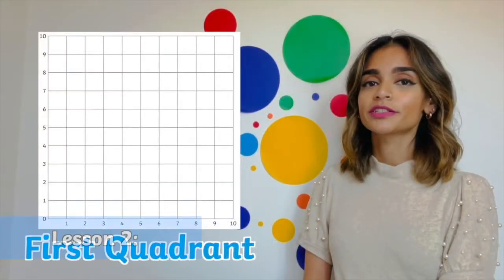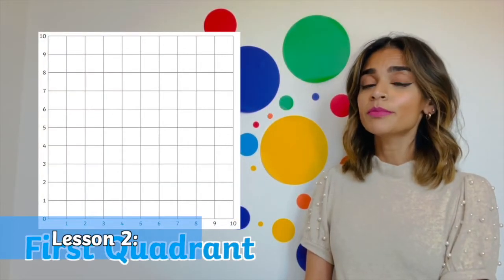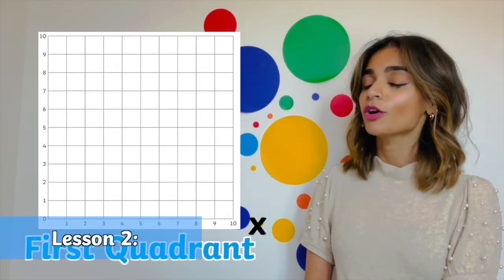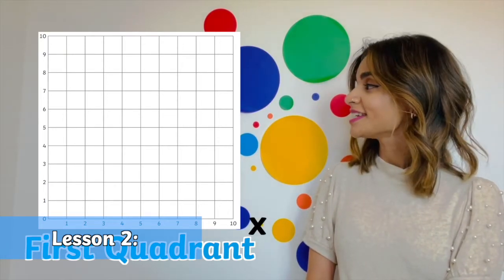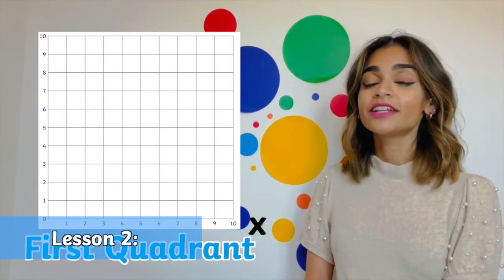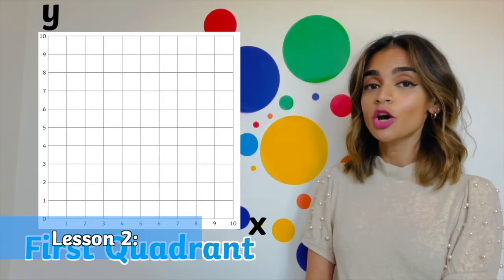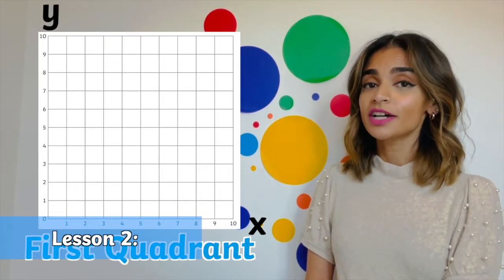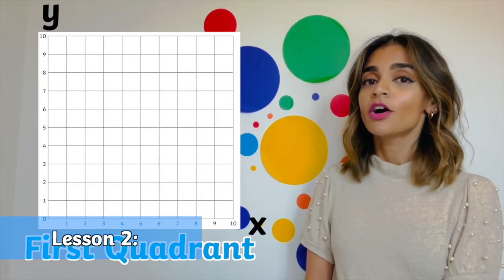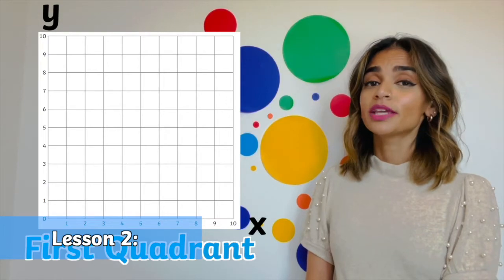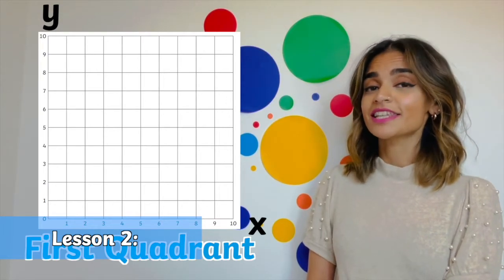In lesson two, children will develop their understanding of how to draw, locate and complete a shape on a grid. They will pick their own coordinates to create a shape of their own with given criteria.